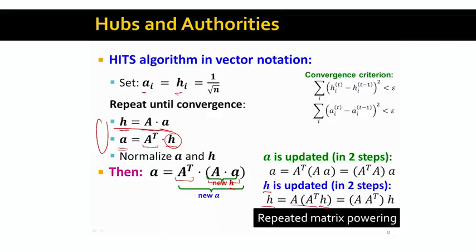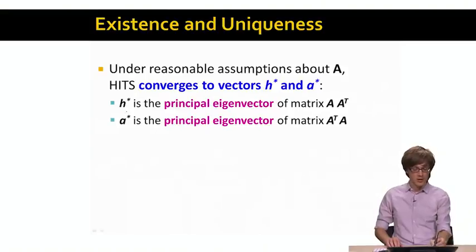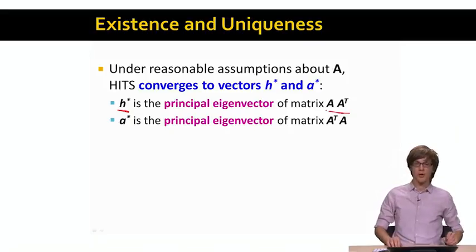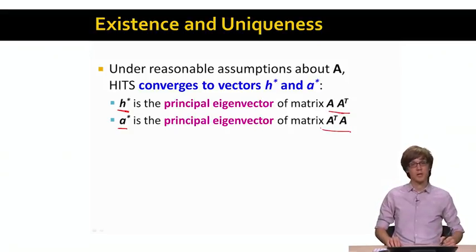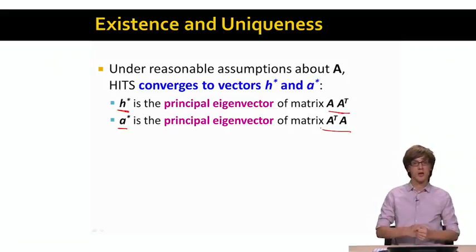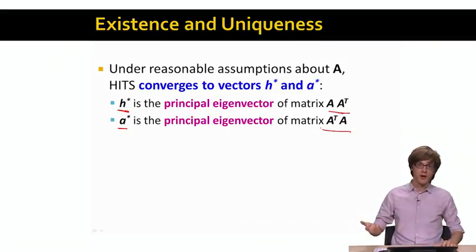In similar fashion, hub scores satisfy: H equals A times A-transpose times H. This means H and A are both eigenvectors of two different matrices: the authority vector A is an eigenvector of A-transpose times A, and the hub vector H is an eigenvector of A times A-transpose. Similar to PageRank, the hub and authority scores correspond to the principal eigenvectors of these transformed adjacency matrices.